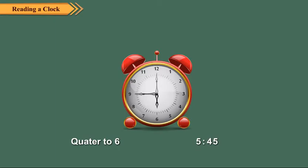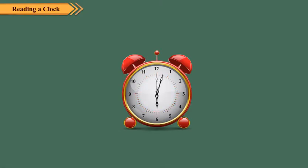So far, we have been reading time to 5-minute accuracy. Let us now read the time to the exact minute. The interval between two numbers is divided into 5 equal parts, so there are 12 × 5, that is 60 equal parts. When the minute hand moves from one number to the next, 5 minutes have passed. And when the minute hand moves from one smaller part to the next, one minute has passed.